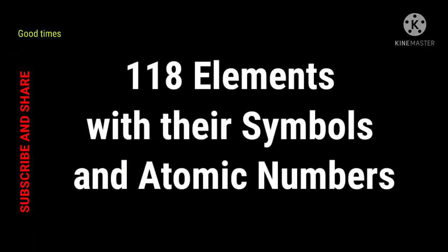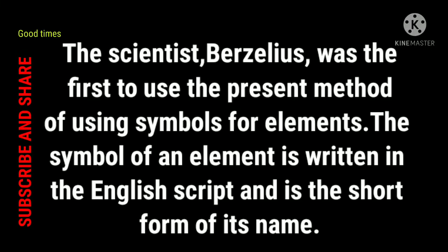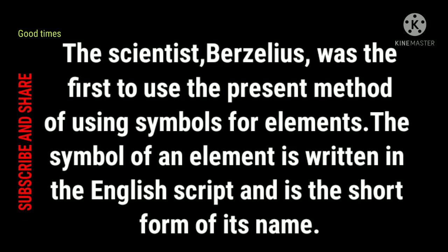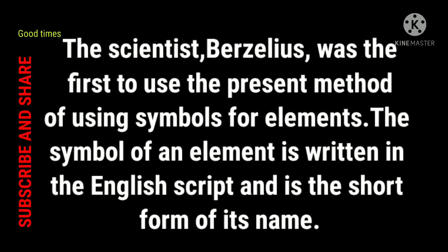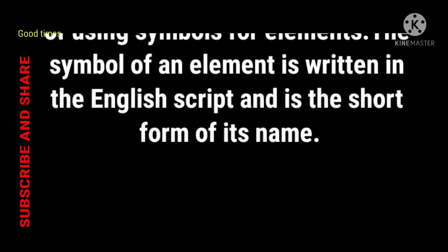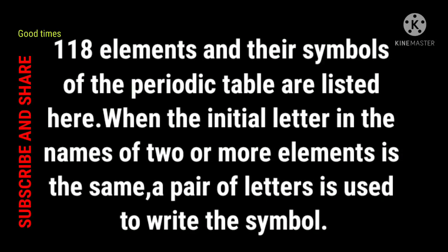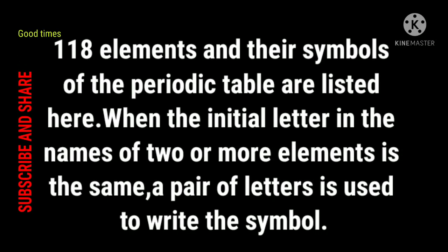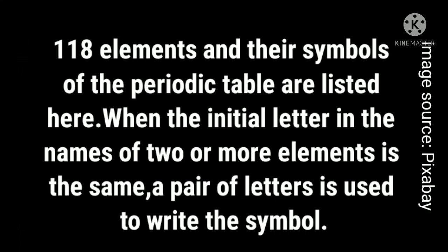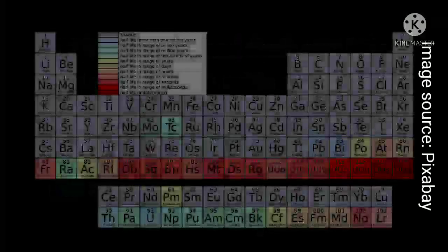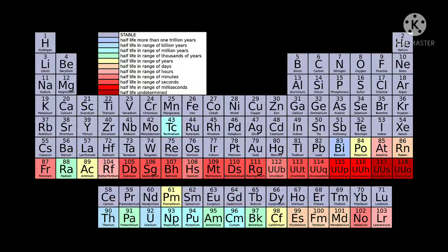The scientist Berzelius was the first to use the present method of using symbols for elements. The symbol of an element is written in English script and is the short form of its name. 118 elements and symbols are listed here. When the initial letter in the name of two or more elements is the same, a pair of letters is used to write the symbol. For example, we write C for carbon and Cl for chlorine.